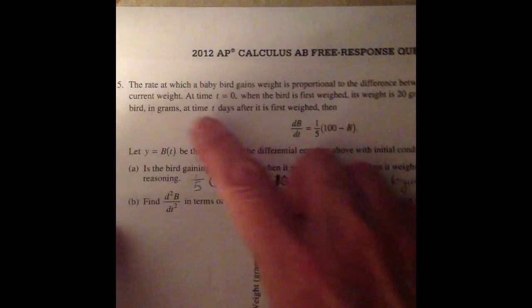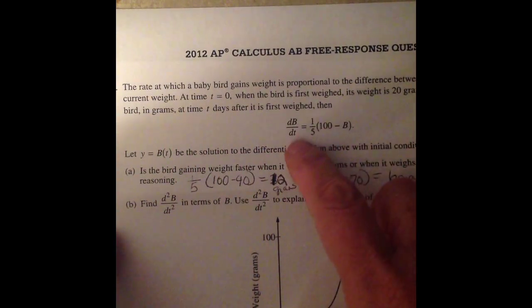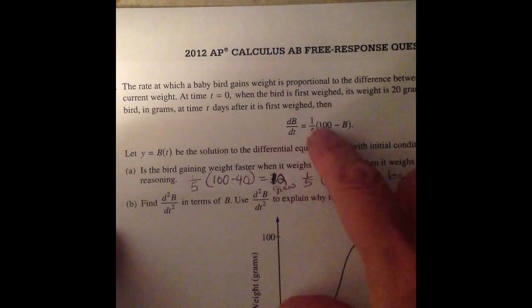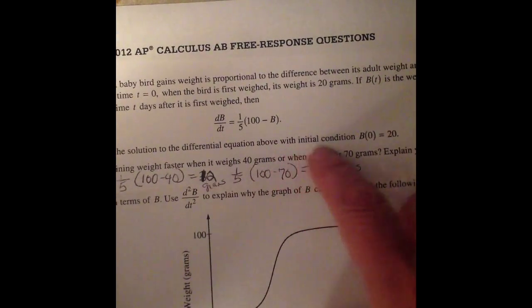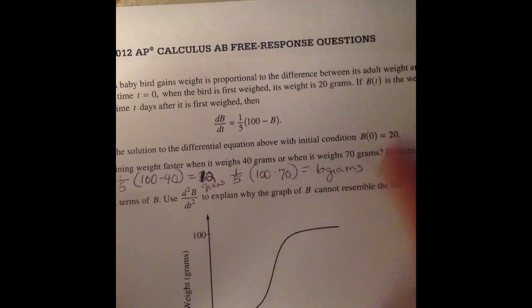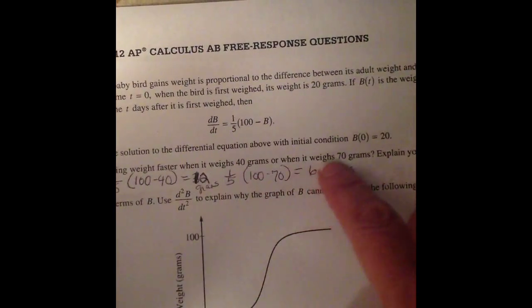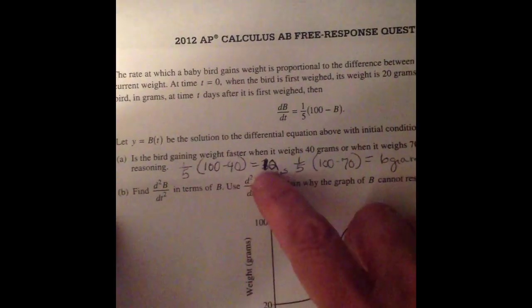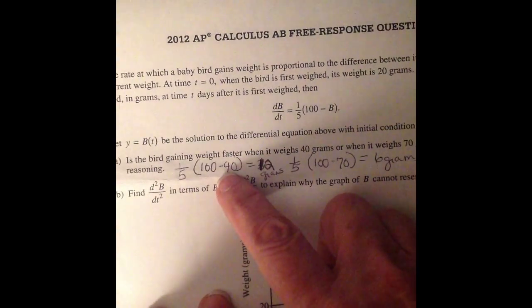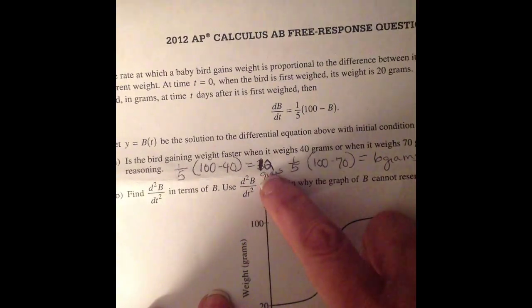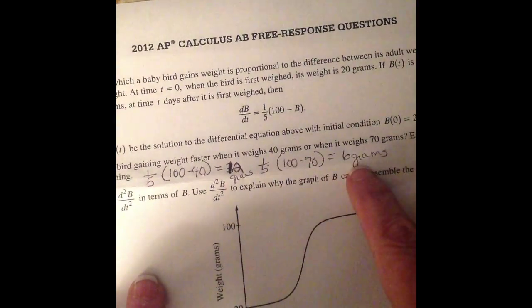If b(t) is the weight of the bird in grams at time t days after its first weight, then here's the rate that the baby gains weight. Let y = b(t) be the solution to the differential equation above with initial condition b(0) = 20. Now part (a) says, is the bird gaining weight faster when it weighs 40 grams or when it weighs 70 grams? Explain your reasoning. Well, this is the rate of how much it gains weight. So you're just going to substitute 40 in and 70 in, and you're going to get 12 grams versus 6 grams. So obviously 12 grams is greater than 6 grams.